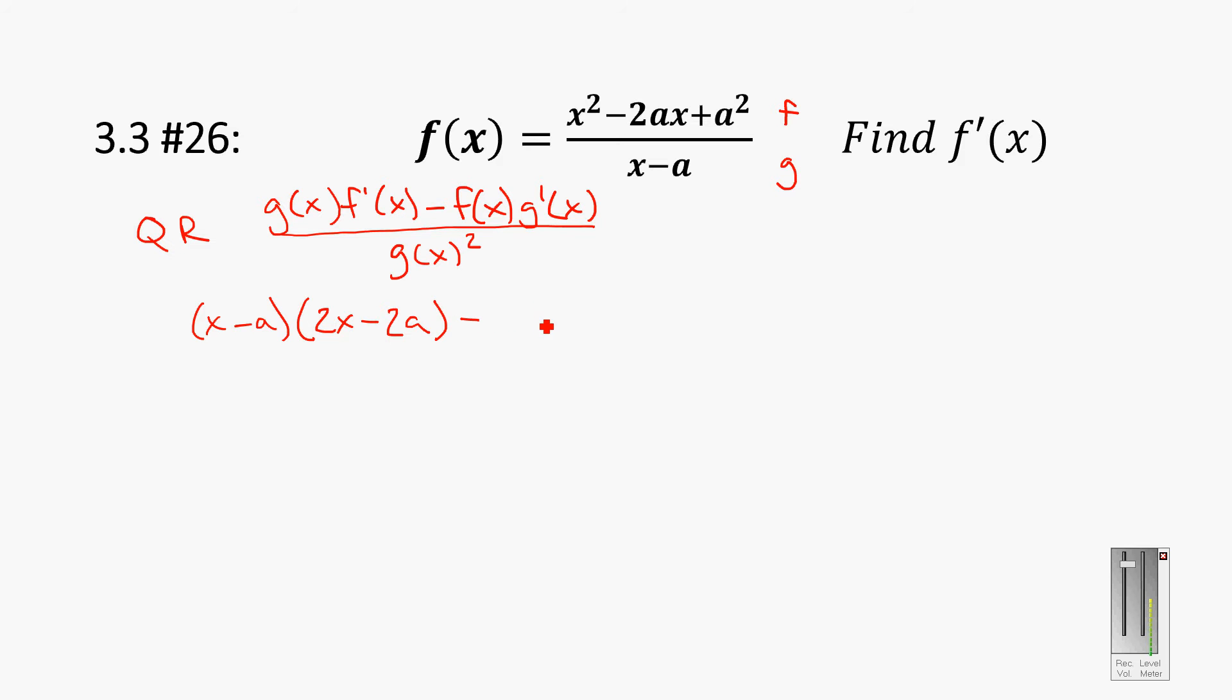Then I'm going to subtract f of x, which is that whole term x squared minus 2ax plus a squared. That's your whole f of x times g prime of x. And g prime of x, then, is just going to be 1, because this is a constant and x just becomes 1. So that's the whole top part. And then we need to make g of x squared on the bottom. And I'm kind of mixed, you know. At some point, you need to decide whether or not you're going to expand this out or not. But your g of x down here is right here.